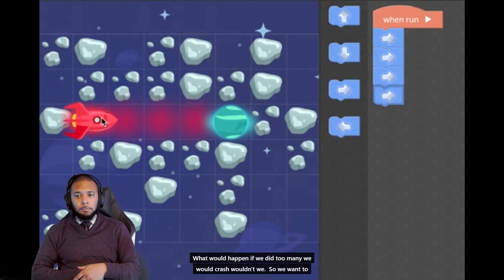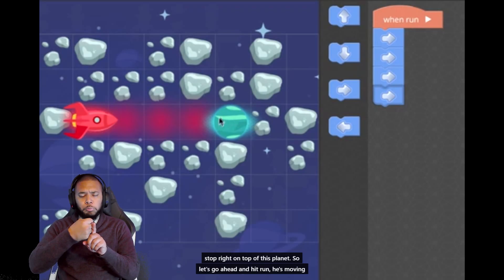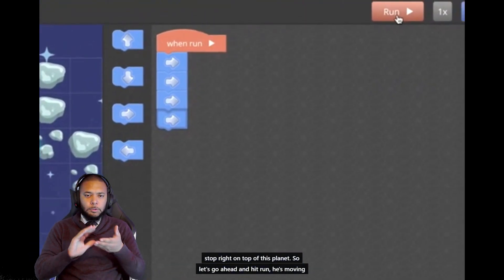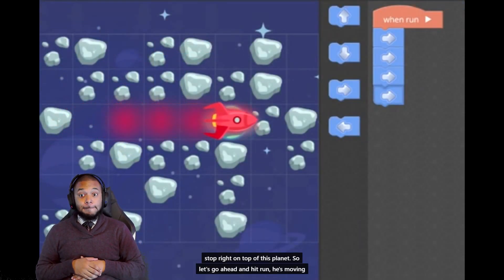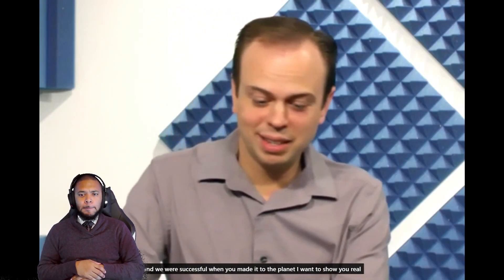What would happen if we did too many? We would crash, wouldn't we? So we want to stop right on top of this planet. Let's go ahead and hit run. He's moving, and we were successful! We made it to the planet.